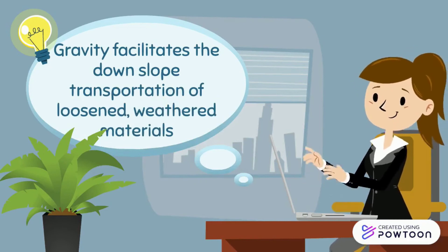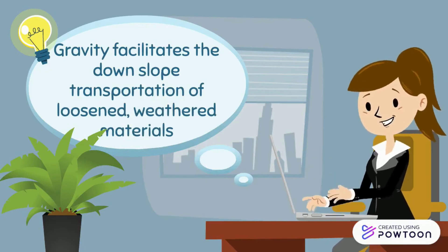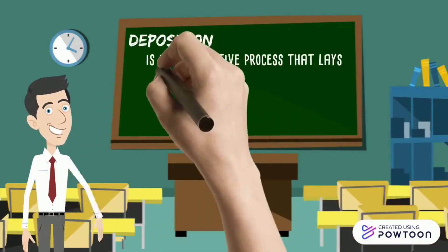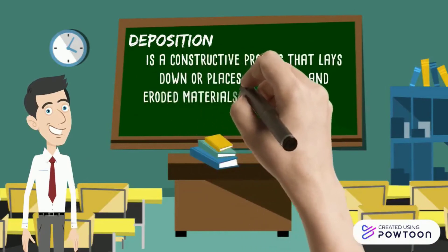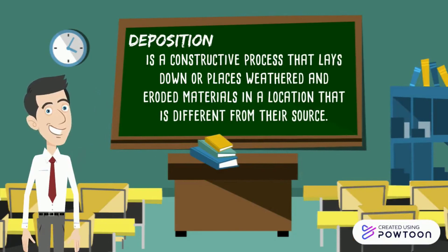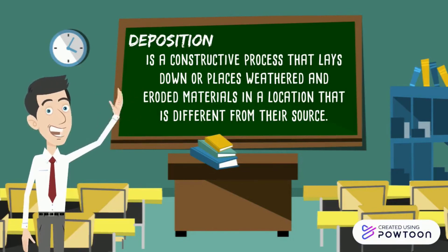Gravity-related erosion is a major component of mass wasting events. The last exogenic process is deposition. It is a constructive process that lays down or places weathered and eroded materials in a location different from their source. Deposition is not specific to a single weathering, erosion, or mass wasting event, but is applied to any consolidated or unconsolidated materials that have accumulated as a result of some natural process or agent. Deposits can result from mechanical, chemical, or biological weathering, and water, wind, ice, or gravity-related erosional processes.